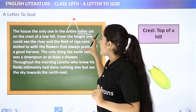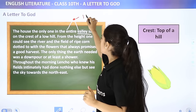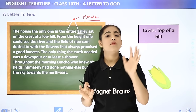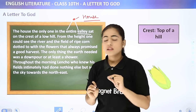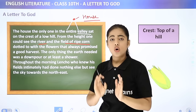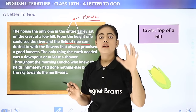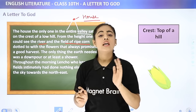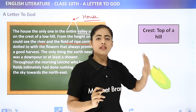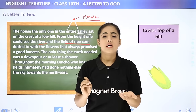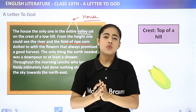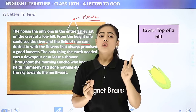From that height, one could see the river and the field of ripe corn. The first thing you can see from there is a river — a source of water — and second, you can see a ripe corn field. Corn is what Lencho grows as a farmer. So from Lencho's house on the hill, you can see a river and a ripe corn field.